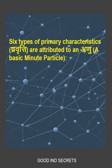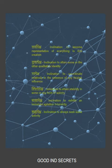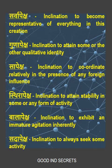Six types of primary characteristics or pravrittis are attributed to an anu or a basic minute particle. They are Sarvapeksha, Gunapeksha, Sapeksha, Sthirapeksha, Balapeksha, and Sadapeksha.